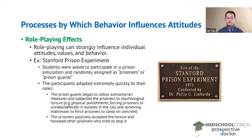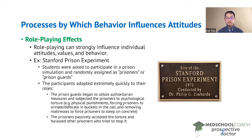The prison guards very quickly began to use authoritarian measures and subjected the prisoners to psychological torture. Some examples include using physical punishments, forcing prisoners to urinate or defecate in buckets in the cell, sometimes refusing to empty their buckets, or removing mattresses from the prisoners and forcing them to sleep on concrete. On the other end, the prisoners began to passively accept the torture and even harass other prisoners who tried to stop it.